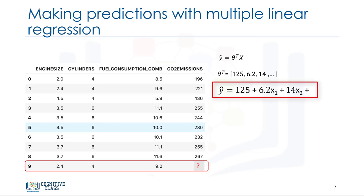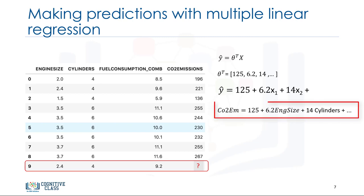For example, let's use theta 0 equals 125, theta 1 equals 6.2, theta 2 equals 14, and so on. If we map it to our data set, we can rewrite the linear model as CO2 emissions equals 125 plus 6.2 multiplied by engine size plus 14 multiplied by cylinder and so on. As you can see, multiple linear regression estimates the relative importance of predictors. For example, it shows cylinder has higher impact on CO2 emission amounts in comparison with engine size.